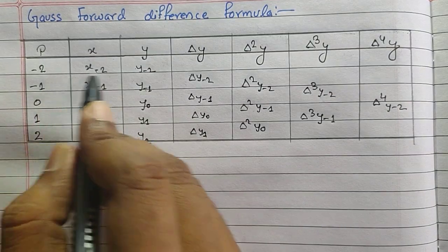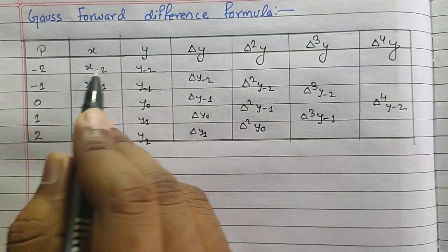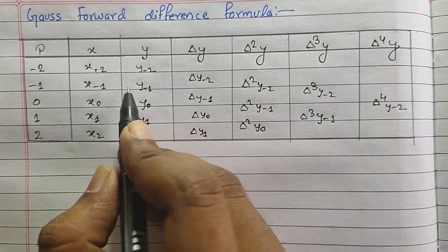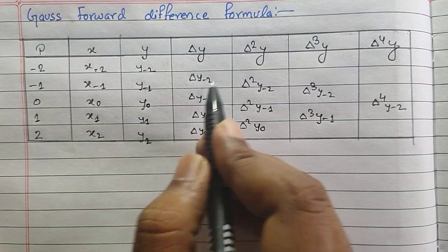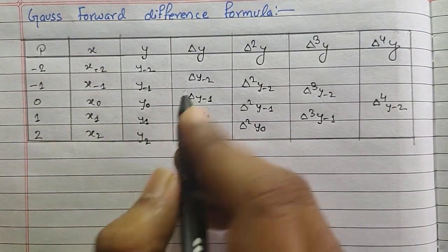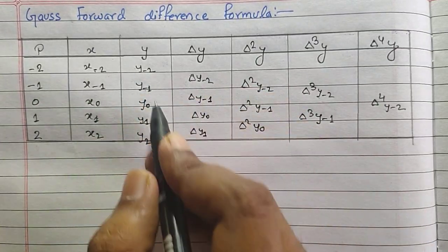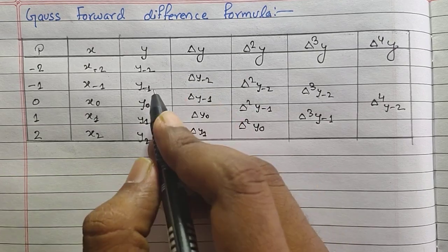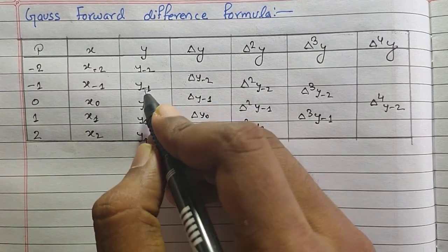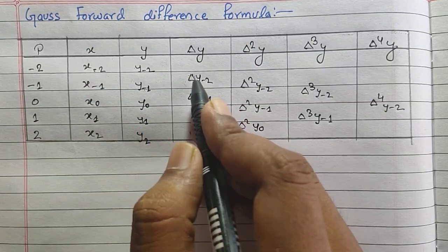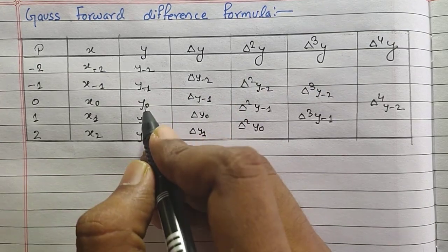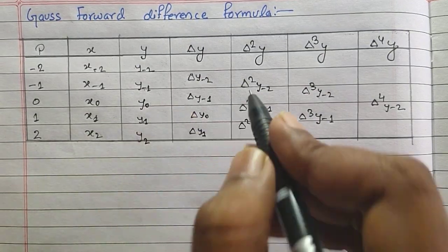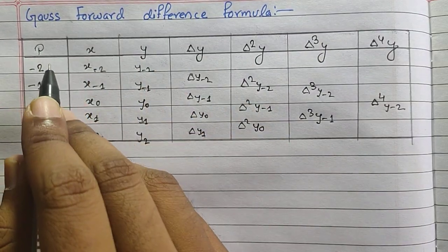This p represents the term position. Minus 2 means this p is minus 2, then all the members of this row will be x minus 2, y minus 2, delta y minus 2, and so on. In forward difference we are also calculating the forward difference likewise we have done in Newton's method. Delta y minus 2 is actually the difference between y minus 1 and y minus 2, so y minus 1 minus y minus 2 gives us delta y minus 2. Similarly delta y minus 1 is given by y naught minus y minus 1.